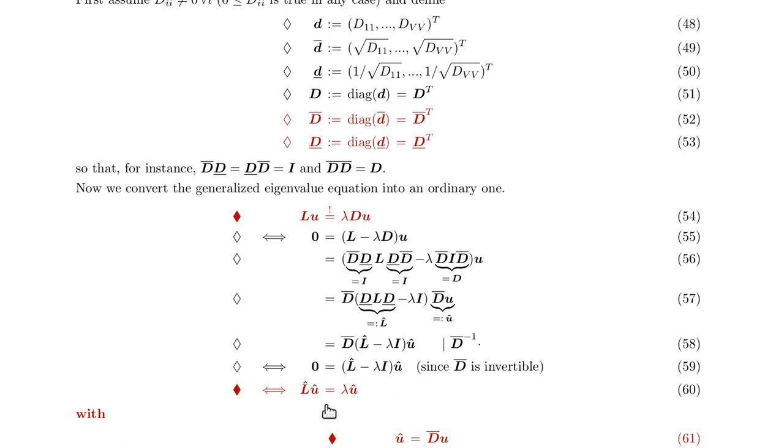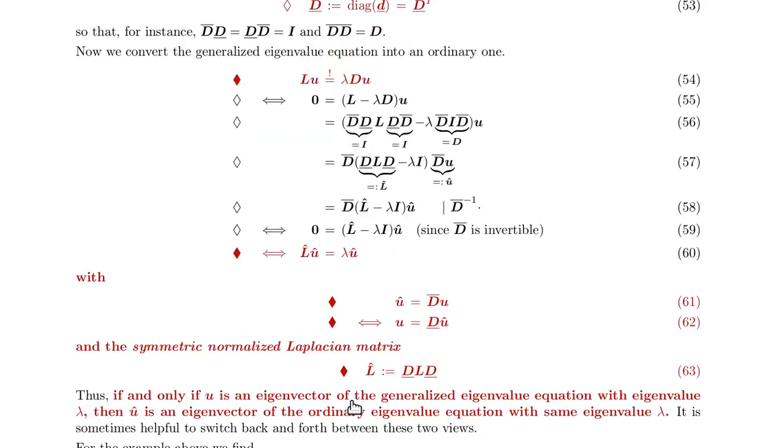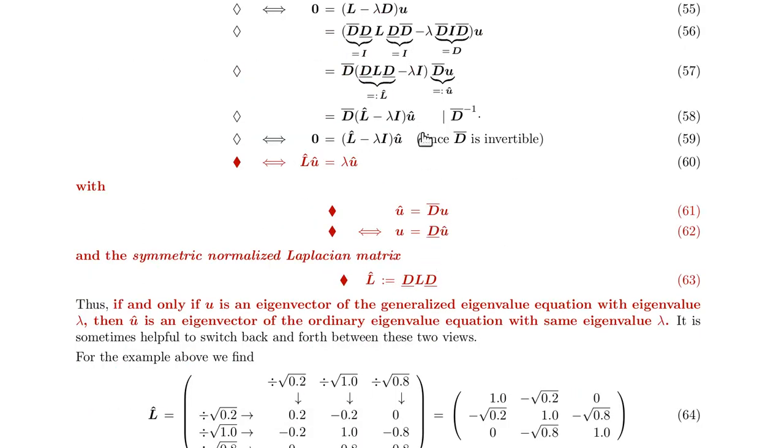So now we can use our intuition for this ordinary eigenvalue equation and remember that we have this mapping: u hat is defined as D bar times u, and conversely u is defined as D underscore times u hat. And L hat is defined as D underscore L D underscore.